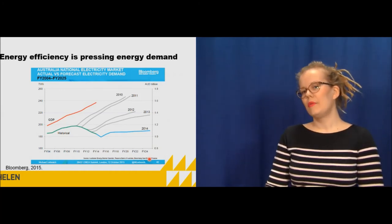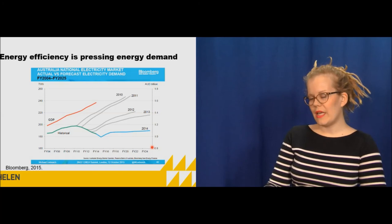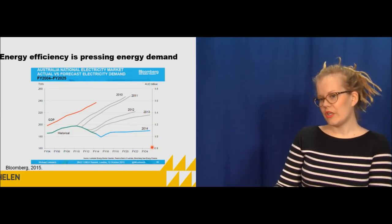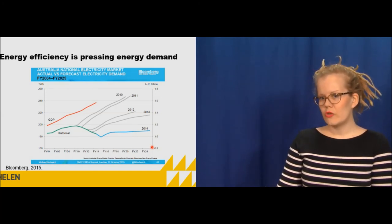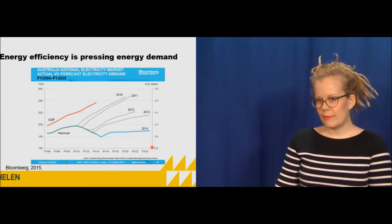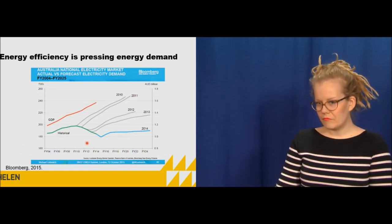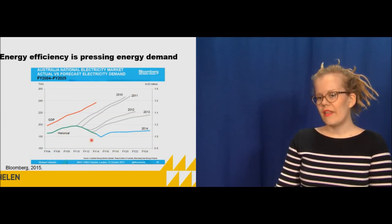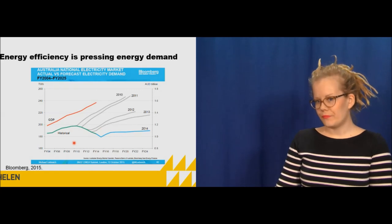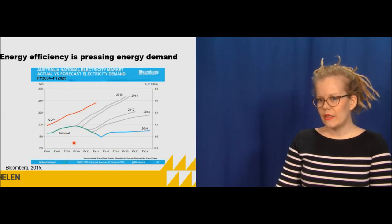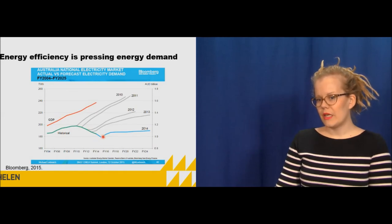And this is an example — as I told in the beginning, global energy consumption is increasing. But this picture shows that it's not true in every country. For example in Australia, the GDP has been growing but still the energy consumption is decreasing. This also shows that the evaluations about electricity demand haven't been that correct, but it has been decreasing quite a lot.